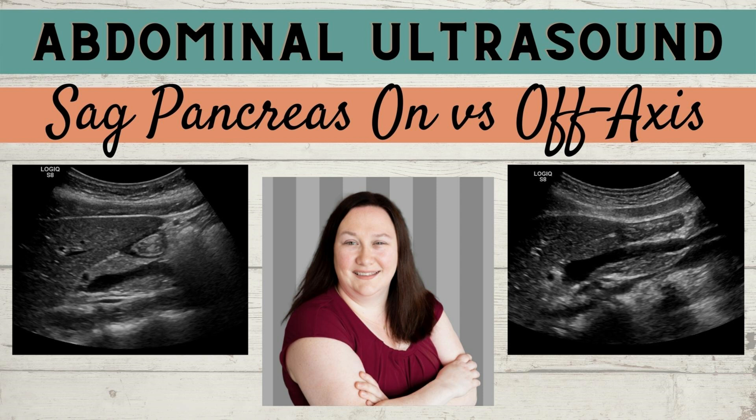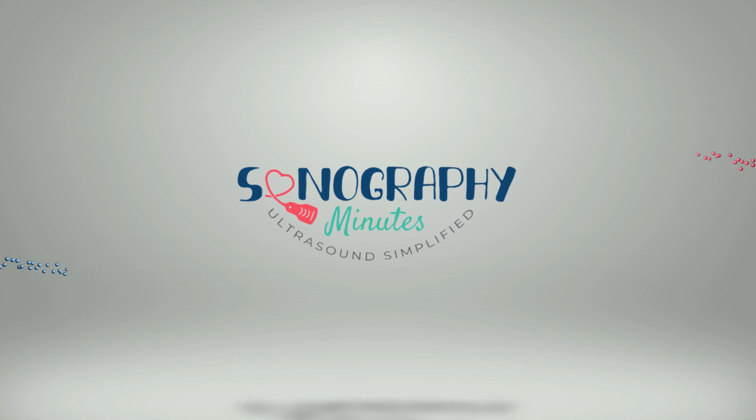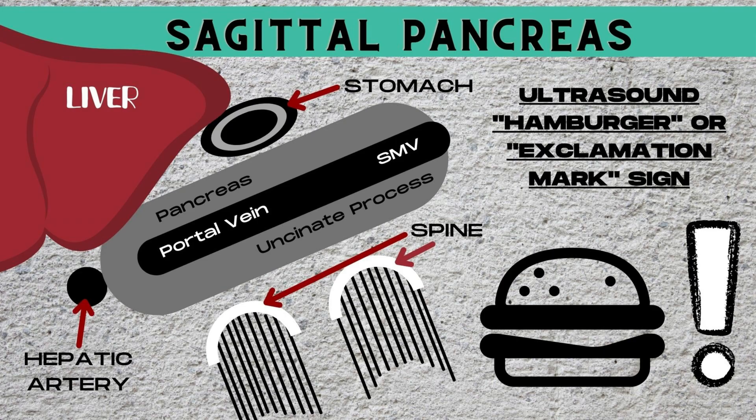Let's ultrasound! On today's edition of Abdominal Ultrasound, we're talking about the sagittal pancreas — is it on-axis or off-axis? First, a little review of the sagittal pancreas. We see the pancreas anterior to the portal vein and the SMV, and we call this either the ultrasound hamburger sign or the exclamation mark sign, depending on whether the hepatic artery is visualized.